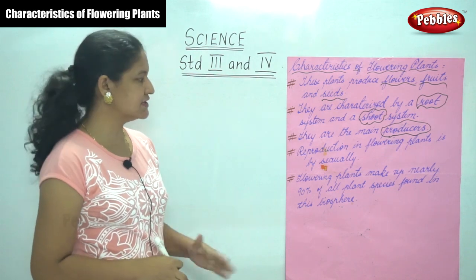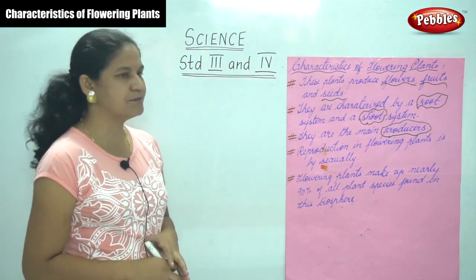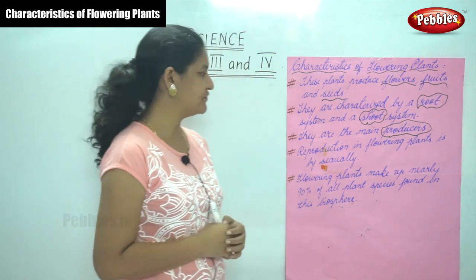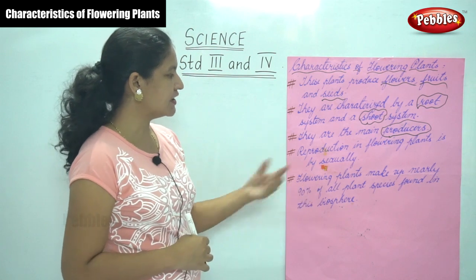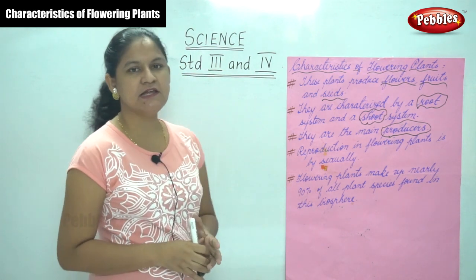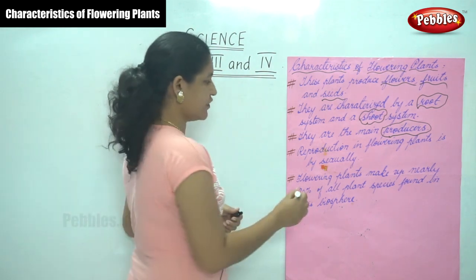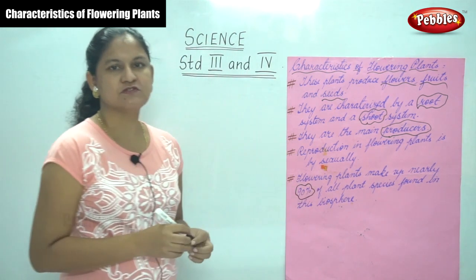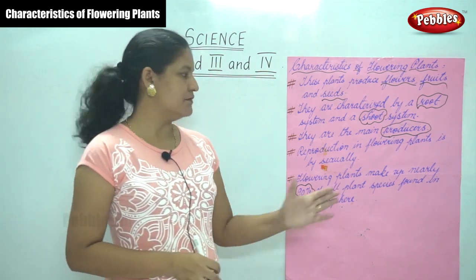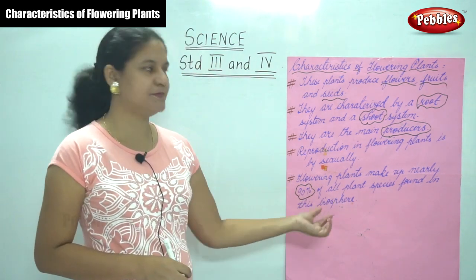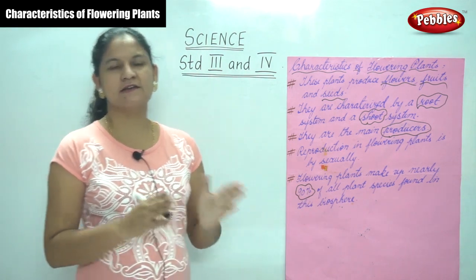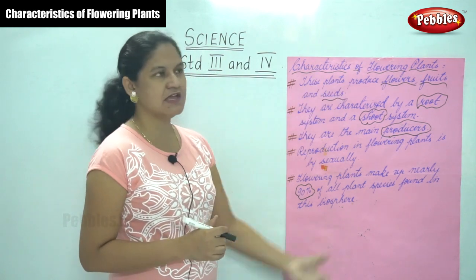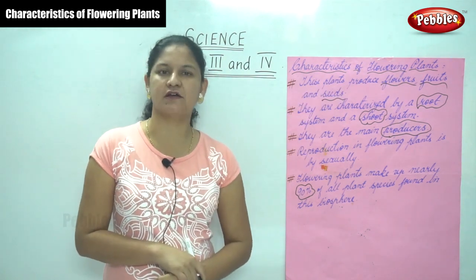The next characteristic is that reproduction in flowering plants is bisexual — they reproduce sexually. And flowering plants make up nearly 90 percent of all plant species found in the biosphere, with the remaining 10 percent being non-flowering plants. So these are the main characteristics of a flowering plant.